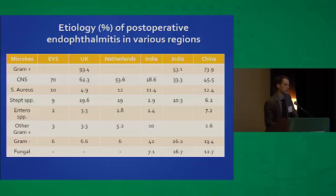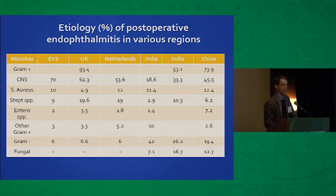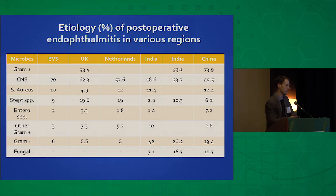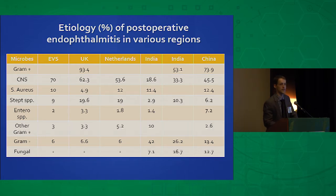Looking at the etiology of organisms most commonly found after acute endophthalmitis, it was gram-positive, but mainly coag-negative staph. Gram-negative was more common in other countries, but was somewhere around 6% to 7% in the U.S. and U.K.